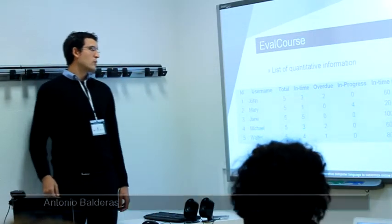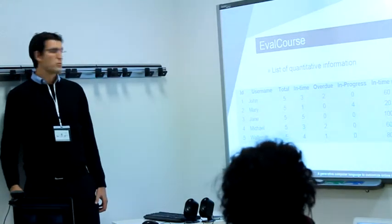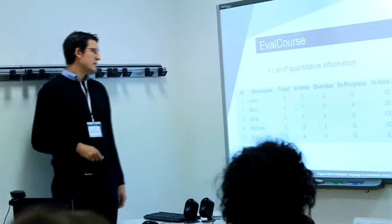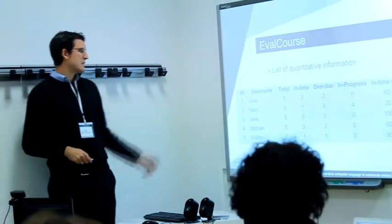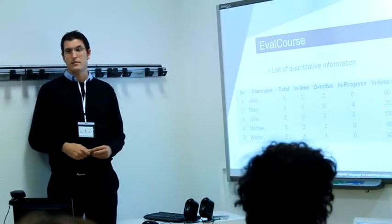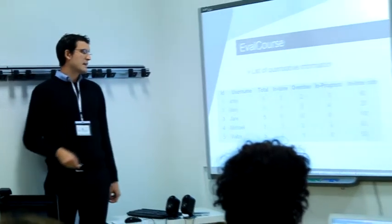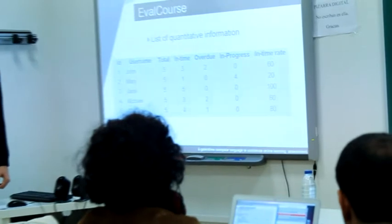In the first one, we have a list of the quantitative information. The first two columns correspond to user data. Then we have total, that is the number of tasks that they have to deliver.